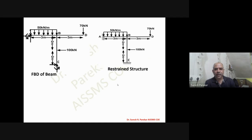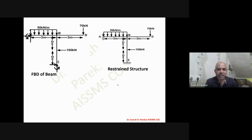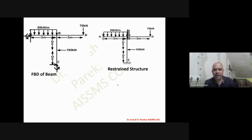Next we form the restraint structure, which means making all rigid joints and supports into fixed supports. Since BD has a hinge, we do not need to make it fixed. Then we find the FDL value — the force at non-zero displacement due to external loads.